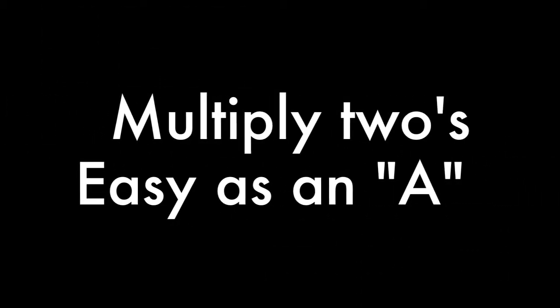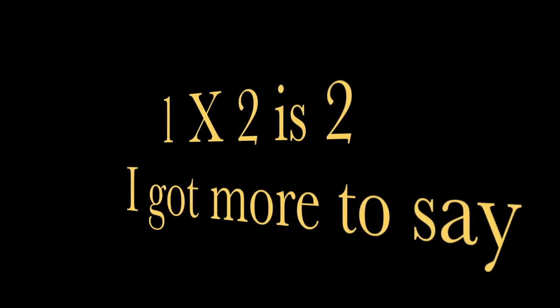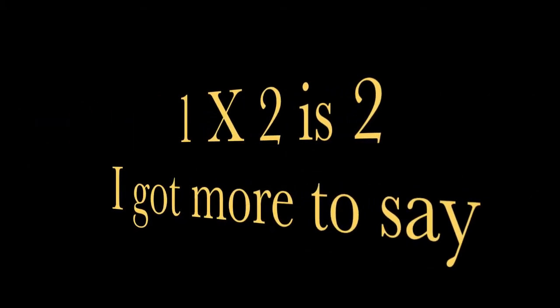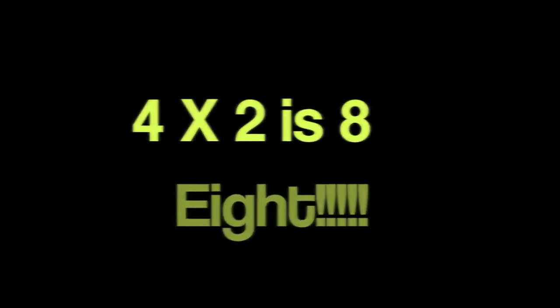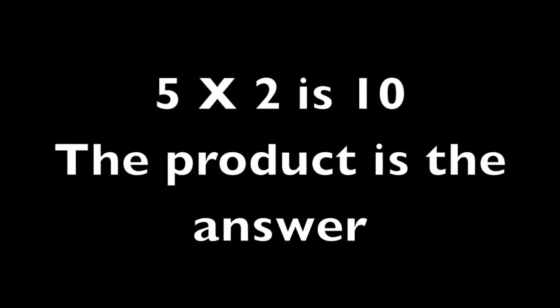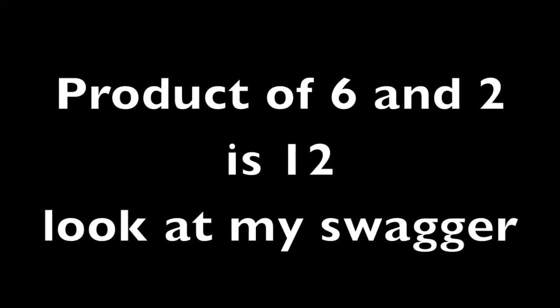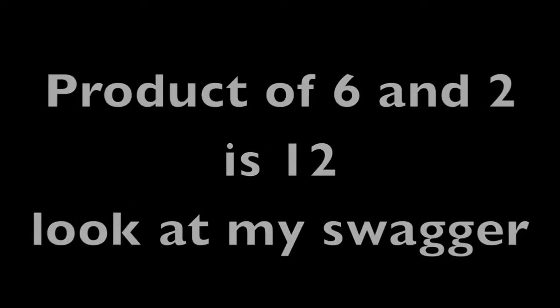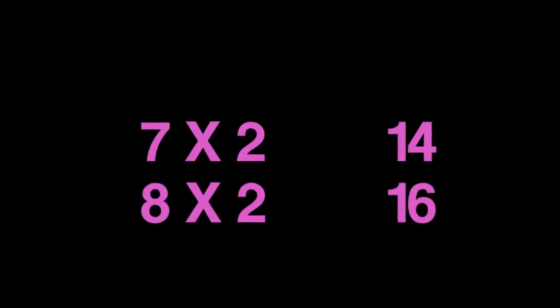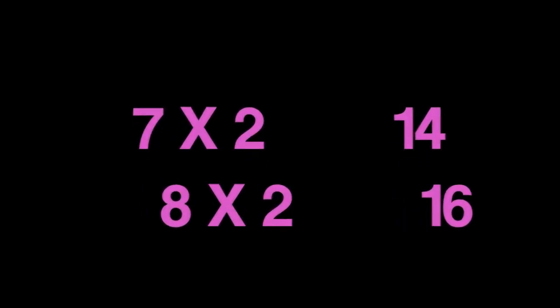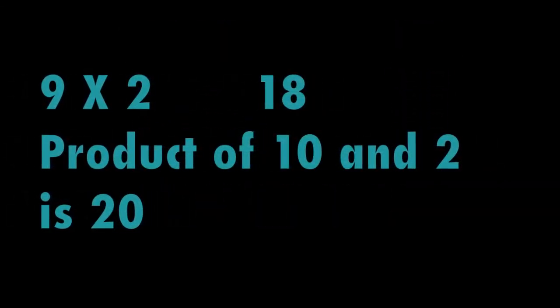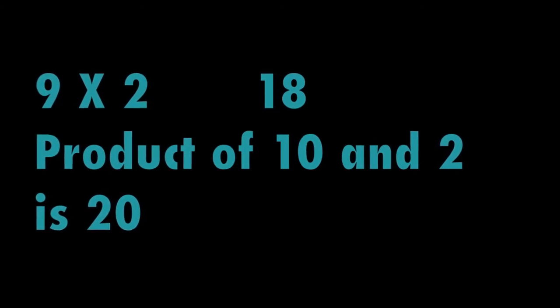Multiply two's easy as an A. One times two is two. I get more to say. Two times two is four. Three times two is six. Four times two is eight. Five times two is ten. The product is the answer. Product of six and two is twelve. Look at my swagger. Seven times two is fourteen. Eight times two is sixteen. Nine times two is eighteen. Product of ten and two is twenty.